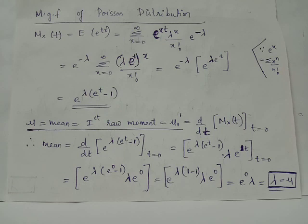So we replace every e raised to t by 1 and we have e raised to lambda into 1 minus 1, into lambda e raised to 0, which becomes e raised to 0 into lambda into e raised to 0, which becomes lambda.